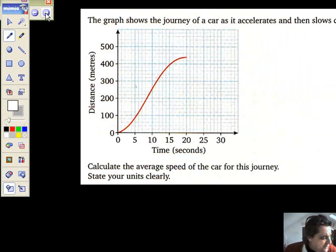Right. This is, in fact, question three from the book. The graph shows the journey of a car as it accelerates and then slows down. So here we are. We're getting faster there, and that's pretty straight. It's constant speed, and then we're slowing down. Right then. Calculate the average speed of the car for this journey and state your units. Fair enough. Same again. What's the distance?